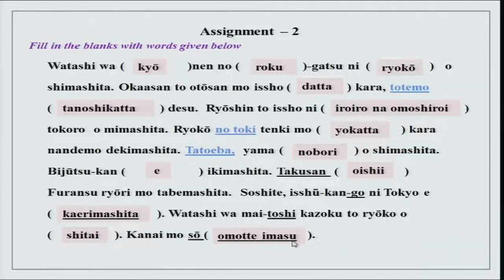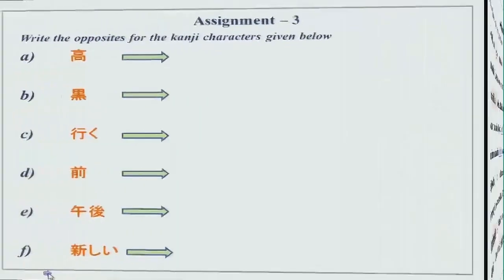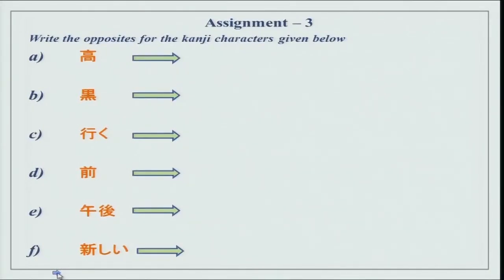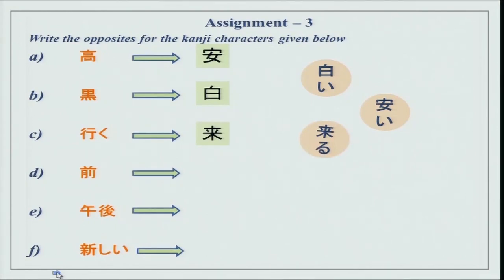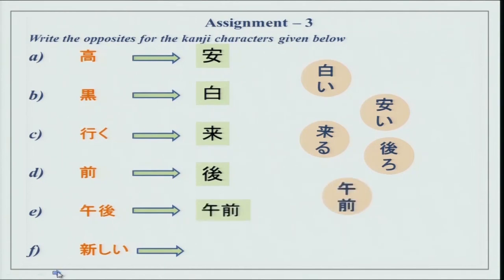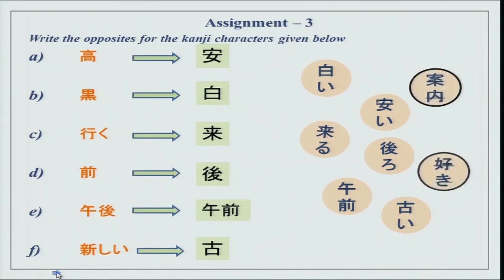Sou omotte imasu — we will do that a little later. There is also more kanji practice: write the opposites for the kanji characters given. Takai — yasui; kuroi — shiroi; iku — kuru; mae — ushiro; gogo — gozen; atarashii — furui. Please write the hiragana for all the characters given — it will help you practice.